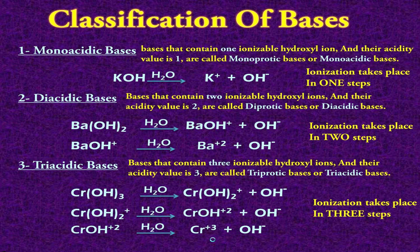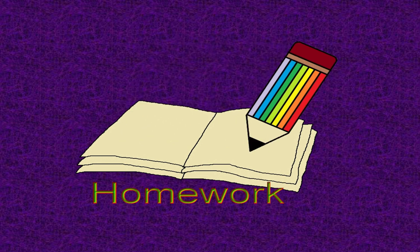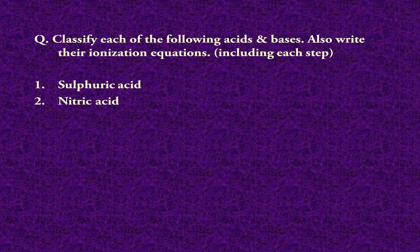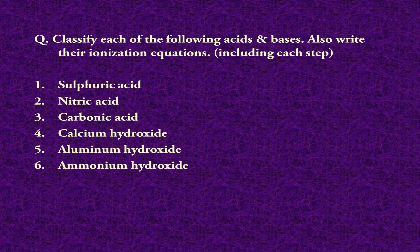I hope you understood everything. Now it's time for some homework. Your question is to classify each of the following acids and bases, and also write their ionization equations including each step. If their ionization takes place in 2 or 3 steps, you must mention each step. The acids and bases are: sulfuric acid, nitric acid, carbonic acid, calcium hydroxide, aluminium hydroxide, and ammonium hydroxide.